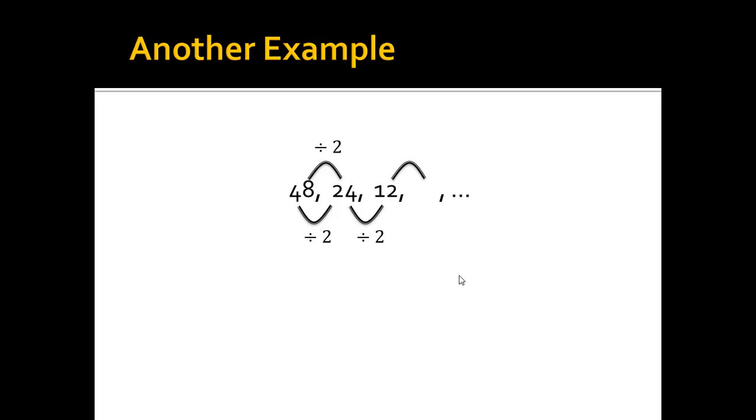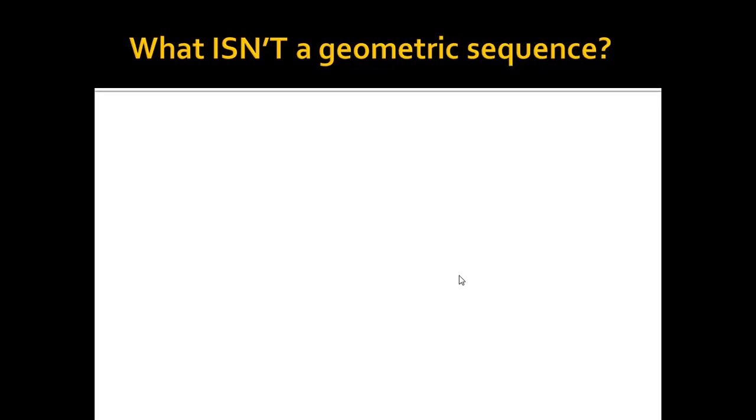And to get from 12 to the next term, I'm obviously going to have to divide by 2, which means that next term would be a 6. And I would keep going. So then I'd go 3, 3 halves, 3 fourths, etc.